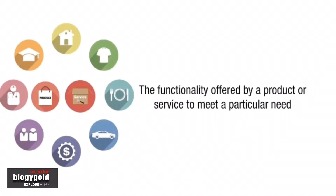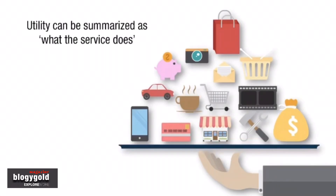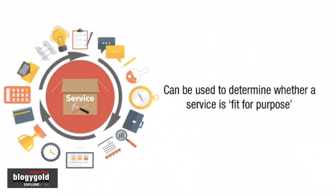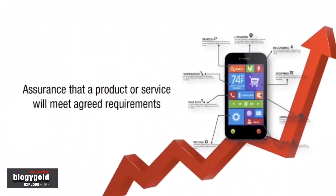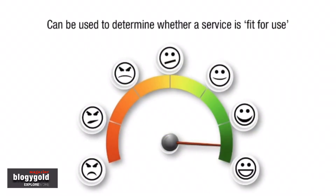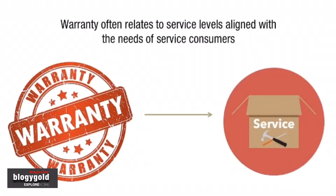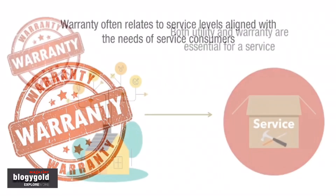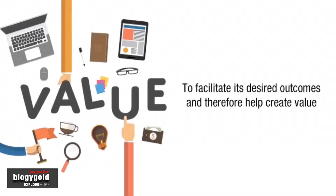Utility and warranty is the last concept in this chapter. Utility is the functionality offered by a product or service to meet a particular need. It can be summarized as what the service does, and can be used to determine whether a service is fit for purpose. Warranty is the assurance that a product or service will meet agreed requirements. It can be summarized as how the service performs, and can be used to determine whether a service is fit for use. Warranty often relates to service levels aligned with the needs of service consumers. Both utility and warranty are essential for a service to facilitate its desired outcomes and therefore help create value.